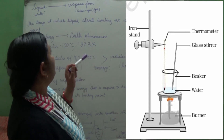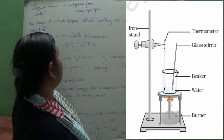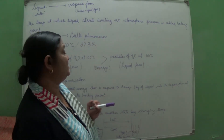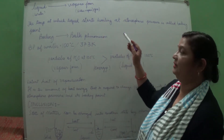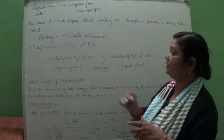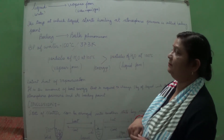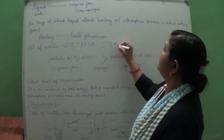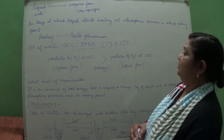Instead of melting point, we now study boiling point. Boiling point is the temperature at which a liquid starts boiling at atmospheric pressure. Boiling is a bulk phenomenon. The boiling point of water is 100 degrees Celsius or 373 Kelvin. This is calculated as 273 plus 100, which equals 373 Kelvin.